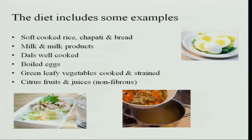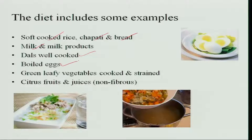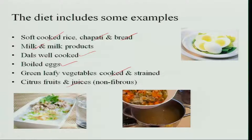Examples of soft diet foods include soft cooked rice, chapati and bread soaked in milk or hot tea, milk and milk products, well-cooked dal, soft boiled eggs, and green leafy vegetables cooked soft and strained to remove fibrous texture. Citrus fruits and non-fibrous juices can also be served. When serving a sick person, presentation is important — food should be served attractively to increase appetite.